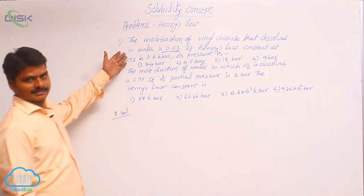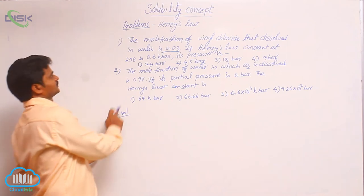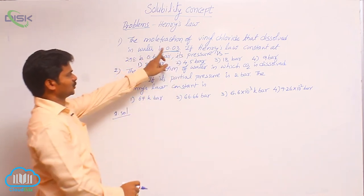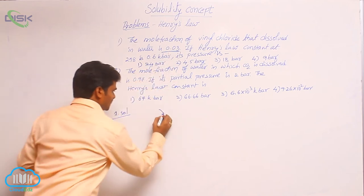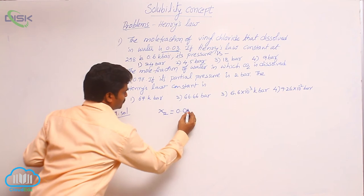Now let us see some numericals based on Henry's law. First problem: the mole fraction of vinyl chloride that dissolved in water is 0.03. That means the mole fraction of gas dissolved is 0.03.